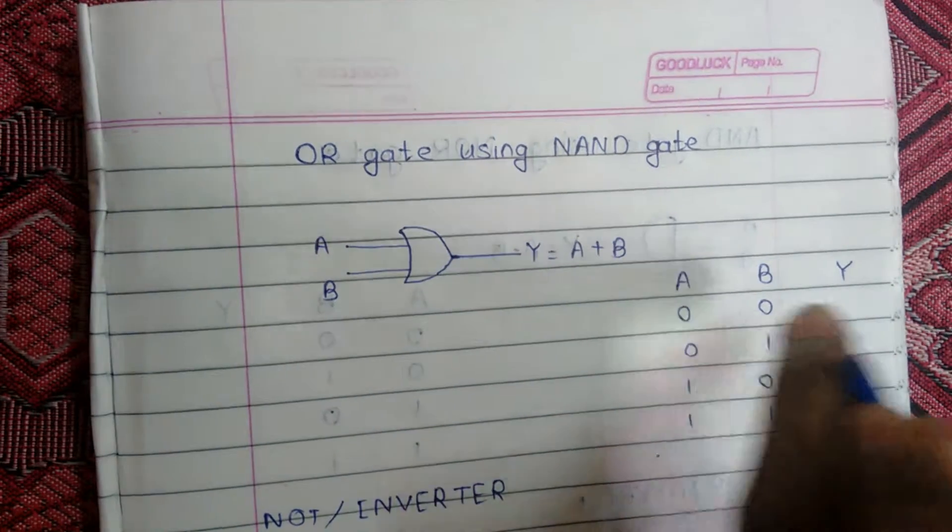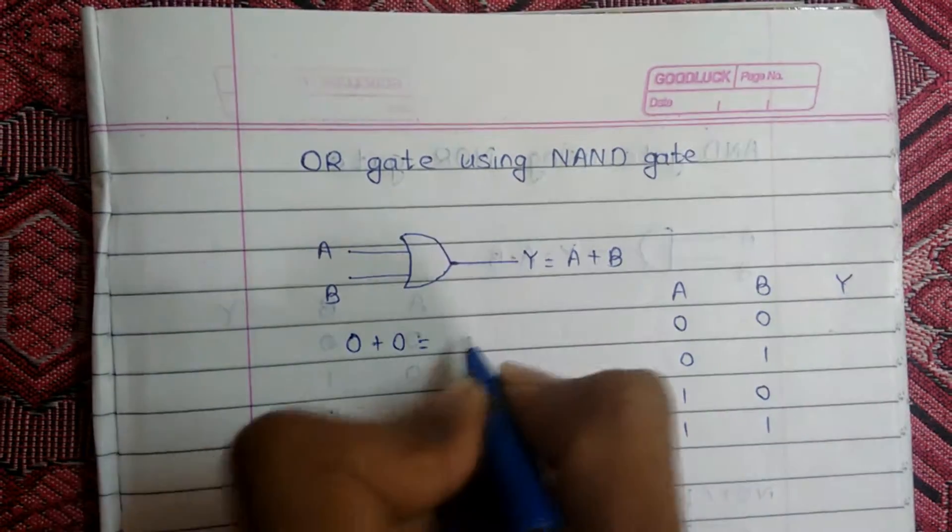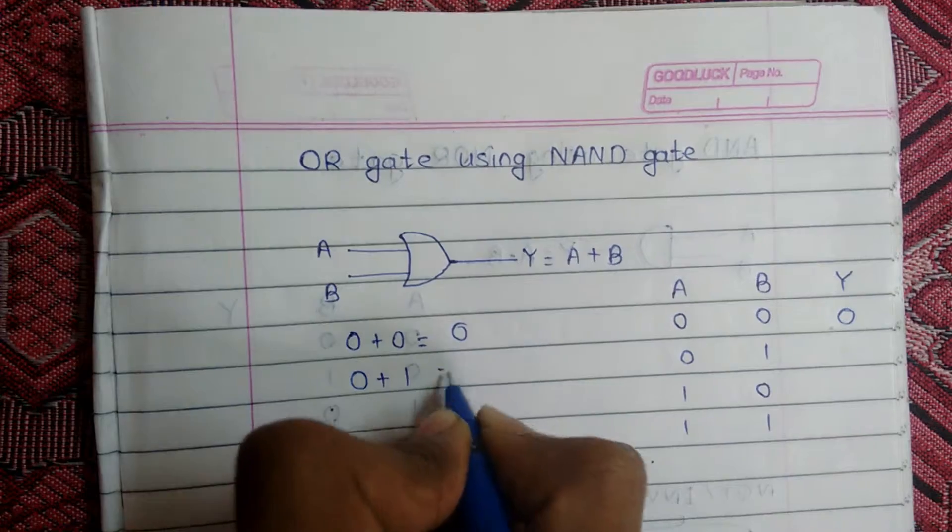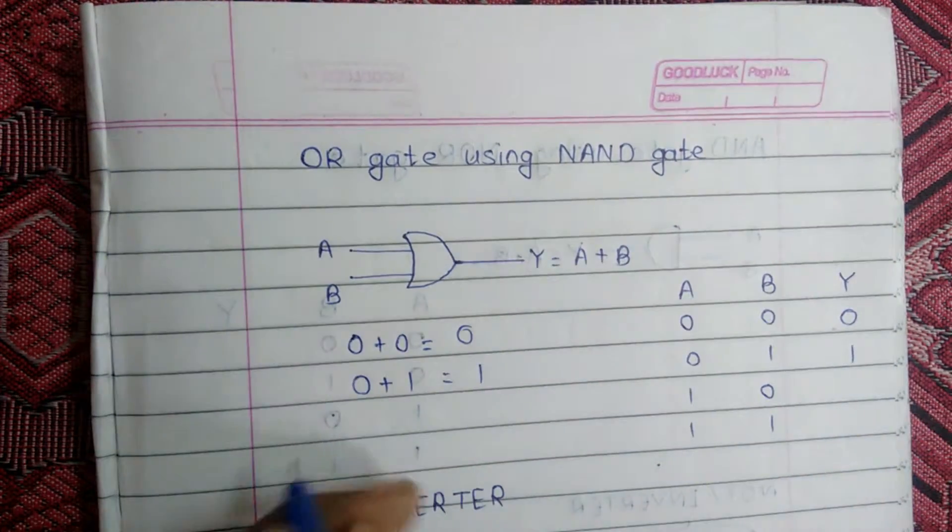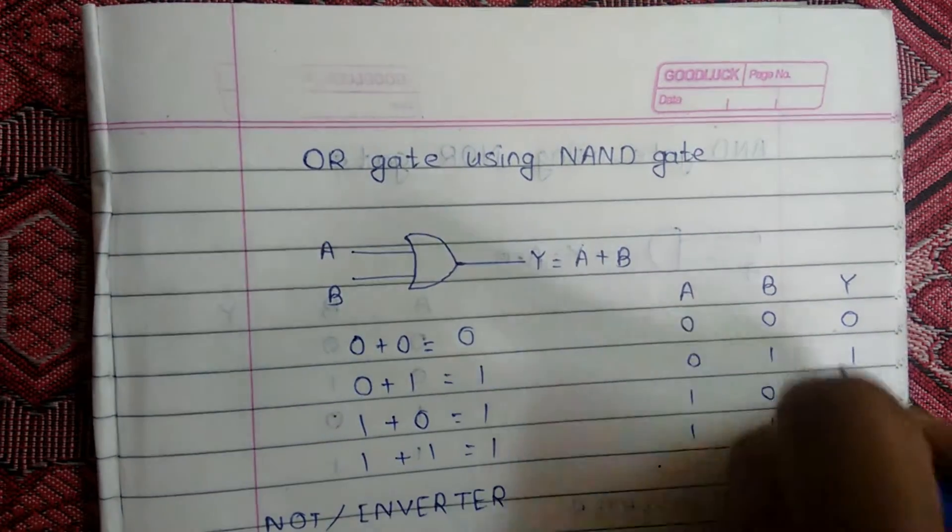So we will directly go to the truth table. If inputs are 0 plus 0, then output is 0. If inputs are 0 plus 1, then output is 1. Similarly, 1 plus 0 equals 1, and 1 plus 1 also equals 1.